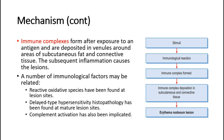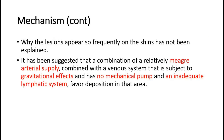These lesions are often seen on the shins. Why the lesions appear so frequently on the shins has not been explained. It has been suggested that a combination of a relatively meager arterial supply, combined with a venous system that is subjected to gravitational effects, and has no mechanical pump and an inadequate lymphatic system, favor deposition in that area.